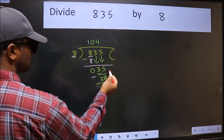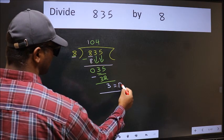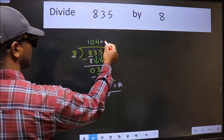No more numbers to bring down. So we stop here. This is our remainder and this is our quotient.